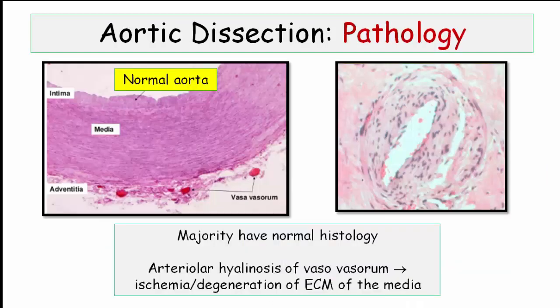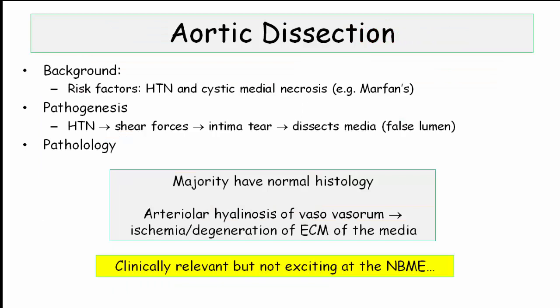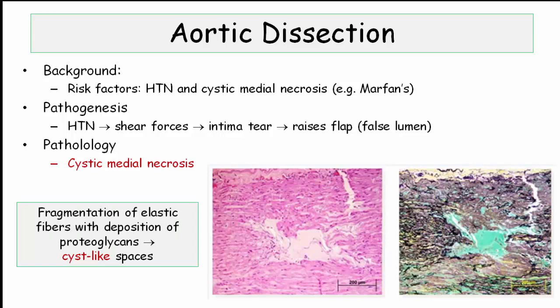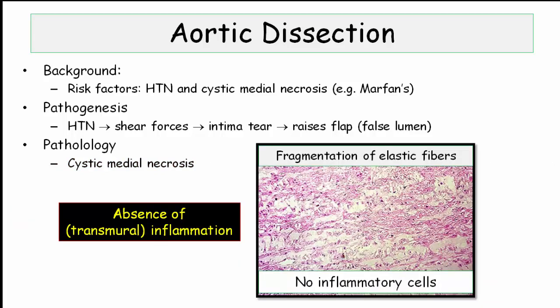Insofar as pathology, the majority of patients with dissection have either normal histology or evidence of hypertensive changes in the vasa vasorum. Here again, as with aneurysm, decreased vessel wall perfusion from the vasa vasorum leads to some measure of degradation in the extracellular matrix of the media. The NBME is more interested in the characteristic lesion of cystic medial necrosis, which simply represents fragmentation of elastic fibers with deposition of proteoglycans that create a cyst-like appearance. Of equal importance when comparing and contrasting with aneurysm is the absence of transmural inflammation — a key distinguishing pathologic feature.